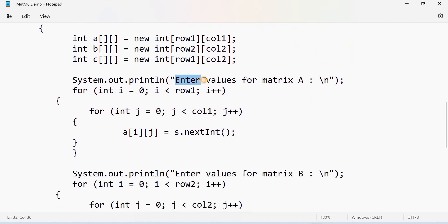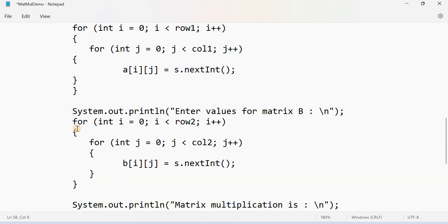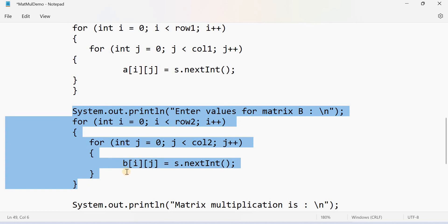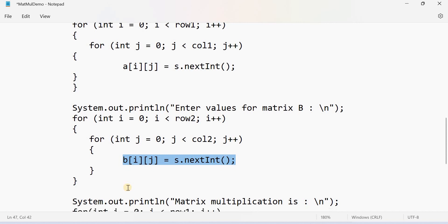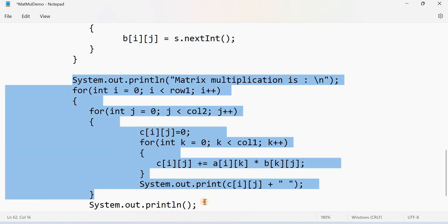Now read the values of matrix A. Use two for loops to perform this and use a method called nextInt method to read the values of matrix A. Similarly, read the values of matrix B by using the nextInt method. This is very important.